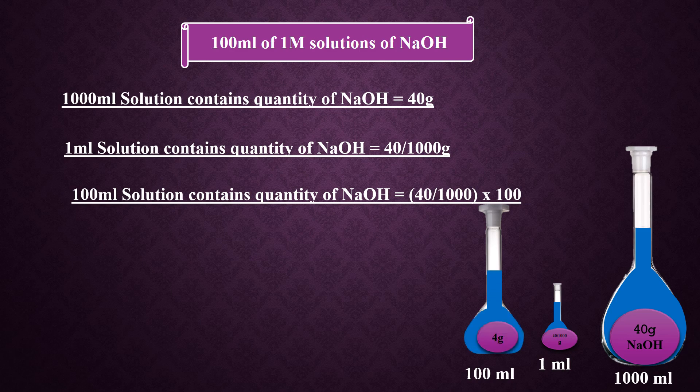Step 4: Multiply the result, which is 4 in this case, by 1, as we want to prepare a 1 molar solution in 100 milliliters. After calculations we get 4 grams.